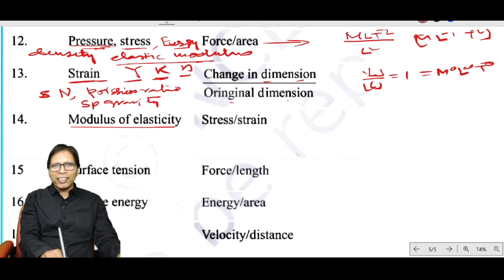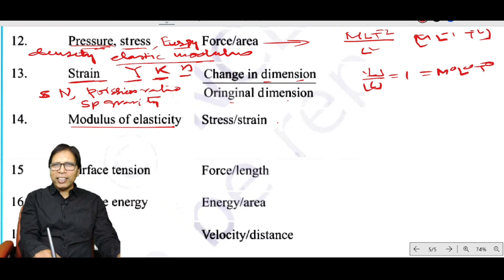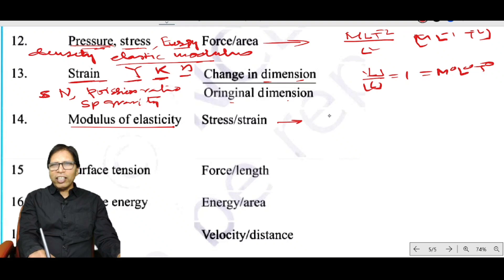Modulus of elasticity has the same dimension as pressure, stress, and energy density, which is ML⁻¹T⁻².